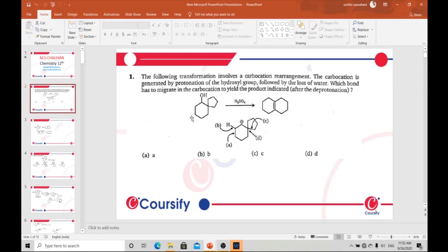Which bond has to migrate in the carbocation to yield the product indicated after the deprotonation? After the deprotonation, which product is here? This product is produced by this reaction, but we have to find out which bond has to migrate.